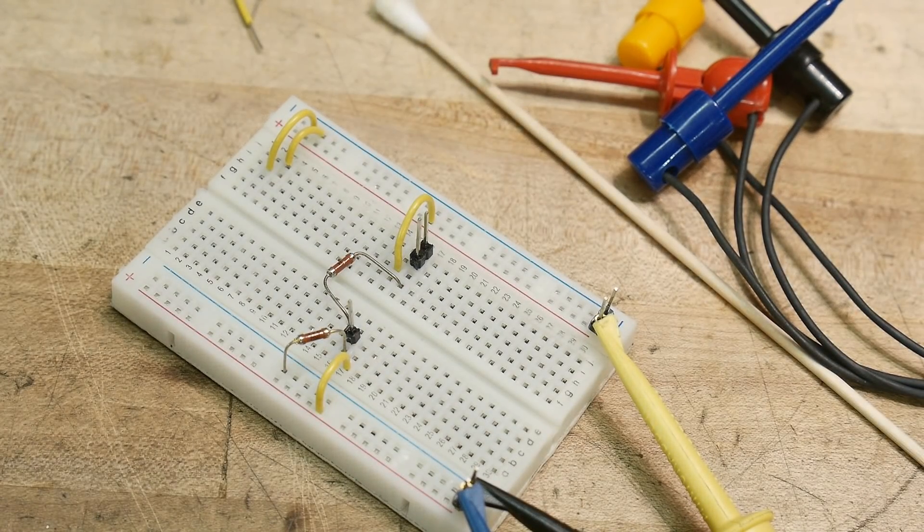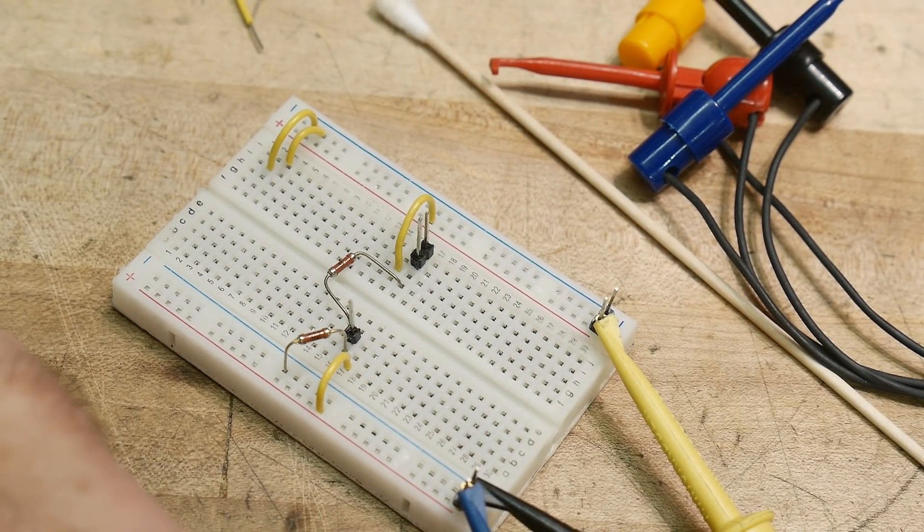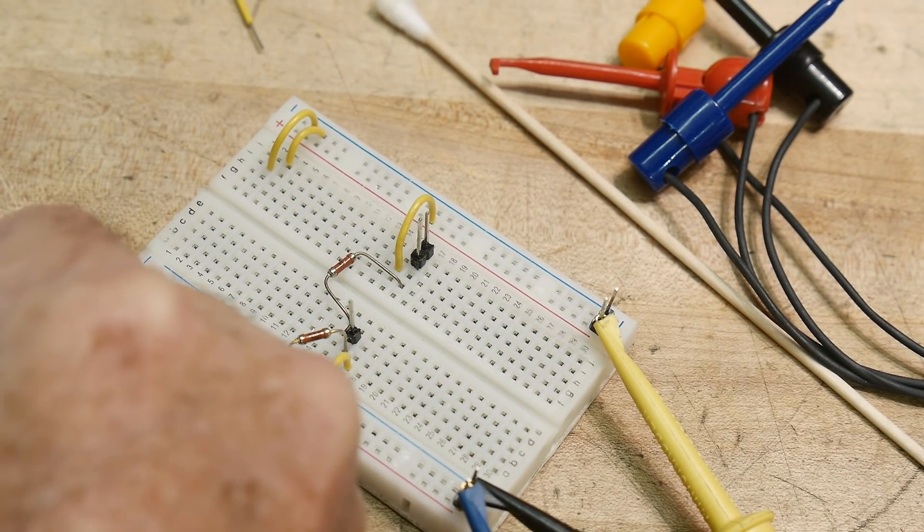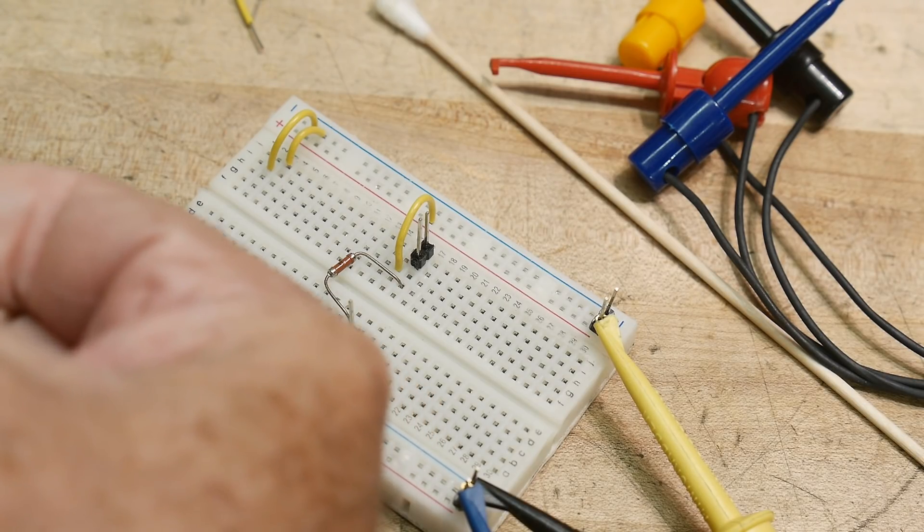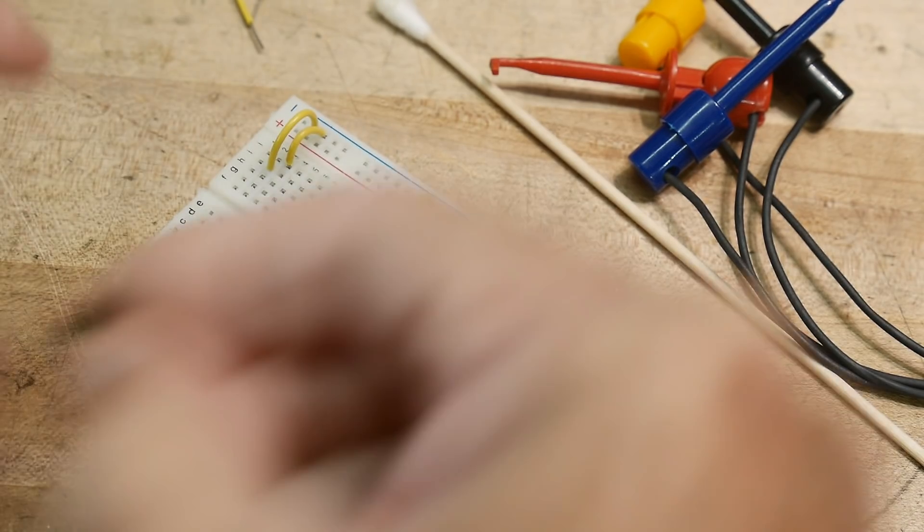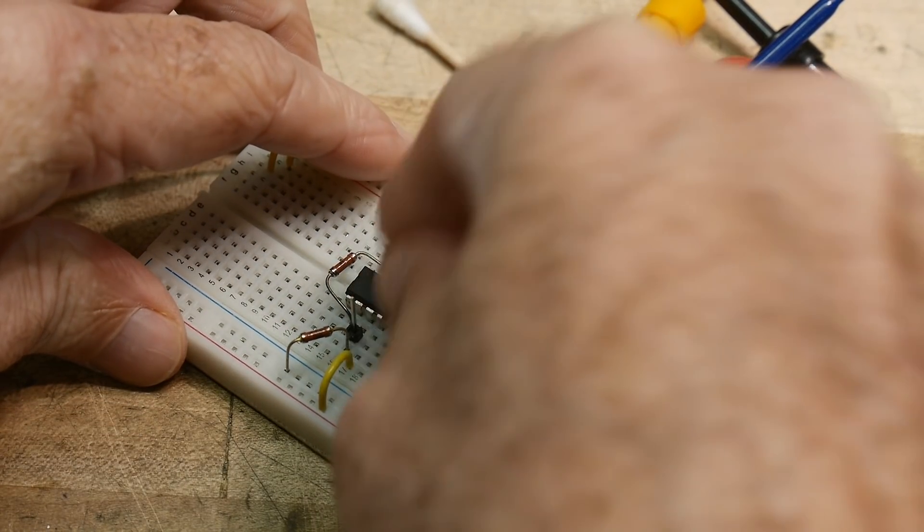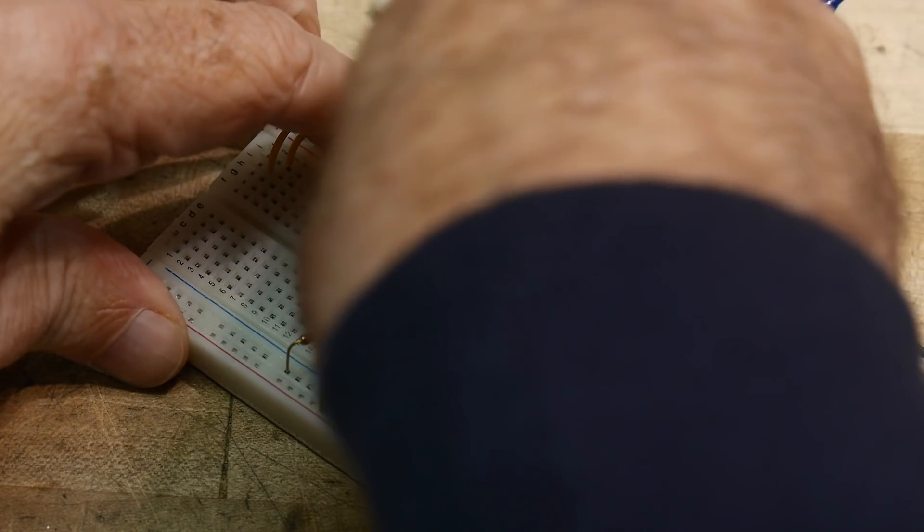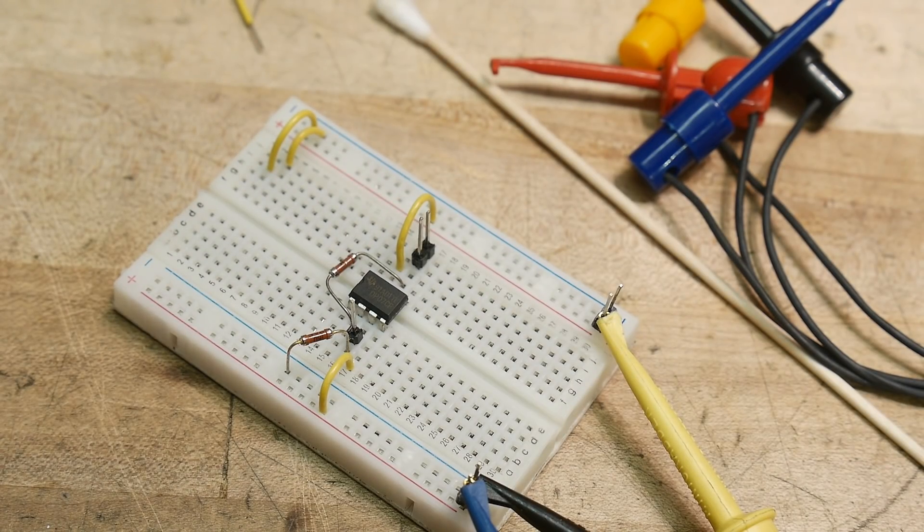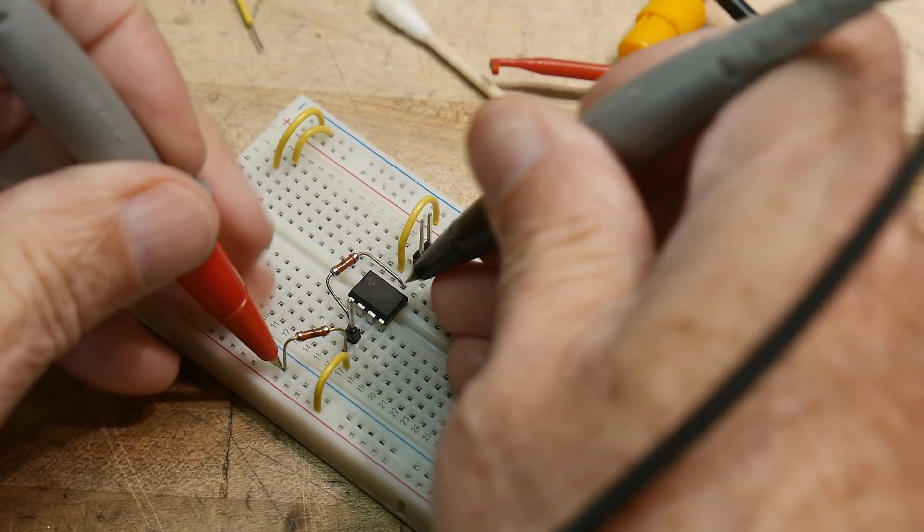But what if you wanted that all the time, right? Then you would buy one of these OP07s. These OP07s are trimmed and you pay a lot of money for that. So let's get one out here and we'll pop him in the circuit. That's why I wanted them. It's a screaming deal, $1.88 for 20 of them. Let's measure him.